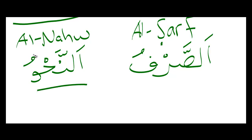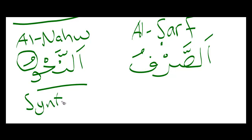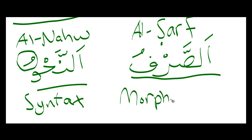Nahu deals with the last vowel — this last haraka — and this is the first thing we're going to be learning. In English, it is commonly known as syntax, and it falls under grammar. Sarf deals mainly with verbs and what's called their morphology. You can remember that because the main thing sarf talks about is verbs morphing into each other or into different conjugations.